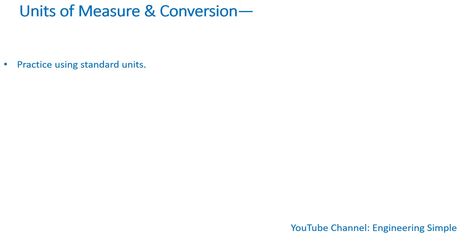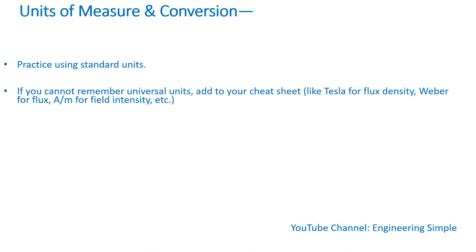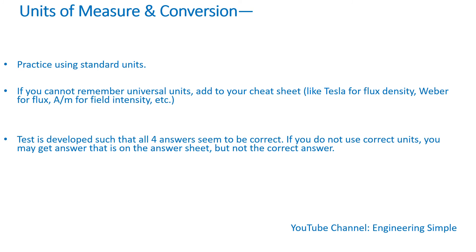Units of measure and conversion: practice using standard units. If you cannot remember universal units, add them to your cheat sheet — for instance, flux density is in Tesla, flux is in Weber, field intensity is in amps per meter. If some values are in inches or feet, make sure you make the right conversion. Otherwise you may get a wrong answer that happens to appear among the four choices and end up selecting it. The test is developed such that all four answers seem correct — if you don't use the correct units, you may get an answer that is on the sheet but is not the right one.